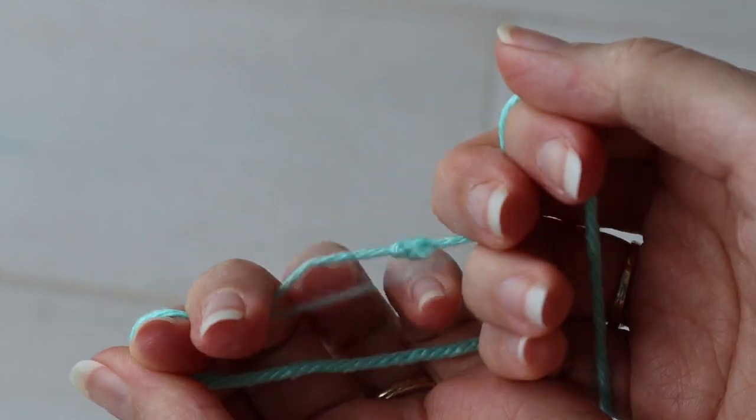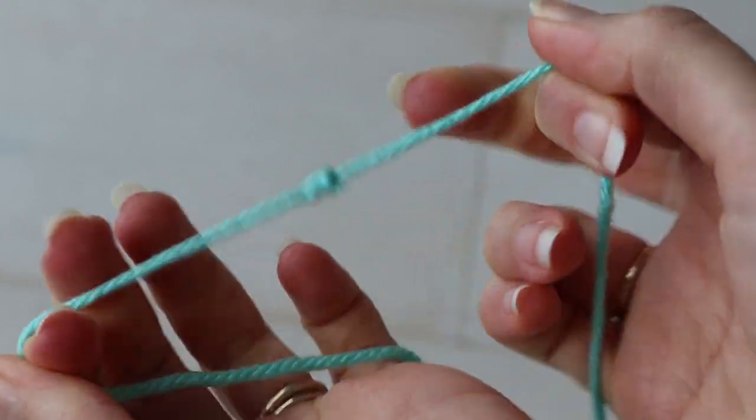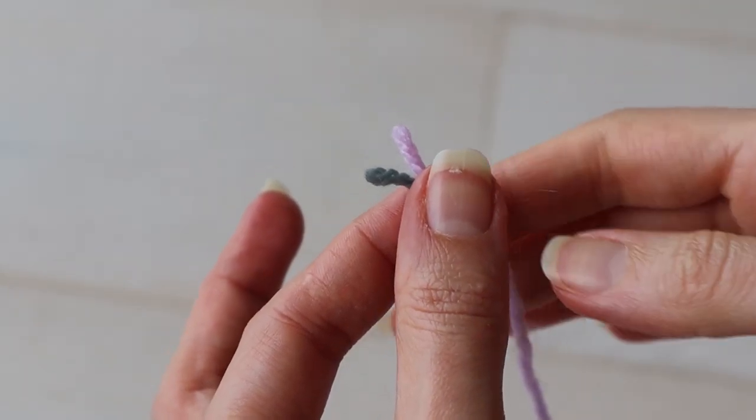And this knotting method is a little tricky, so let me just show you first how it's done and then we'll break it down. I'm going to demonstrate with two different colors of yarn.